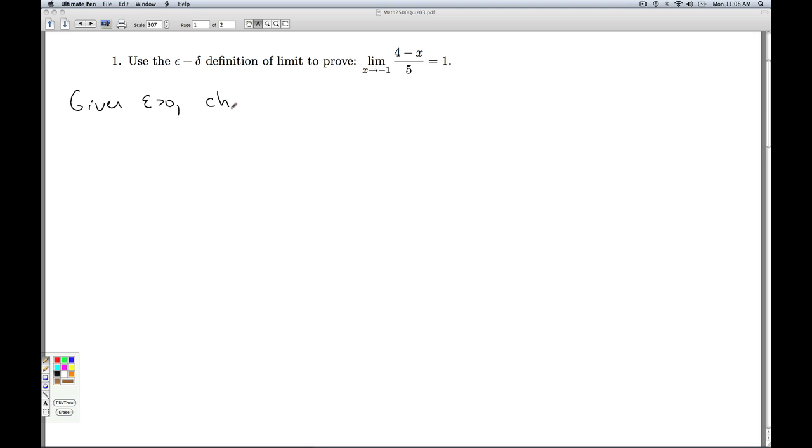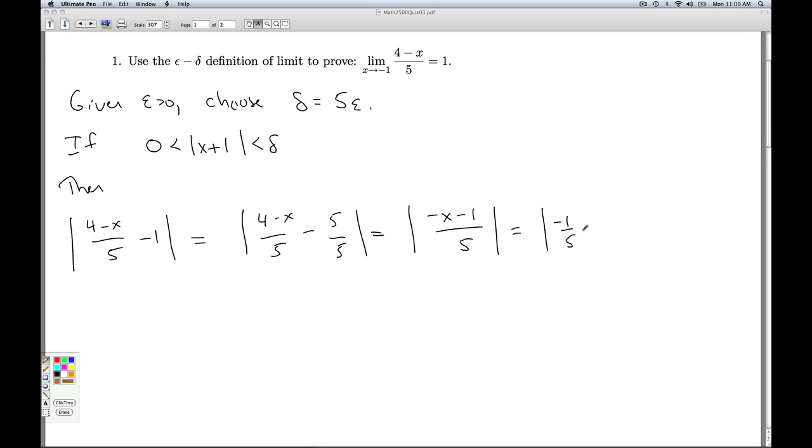Given epsilon greater than 0, choose delta to be 5 times epsilon. Then if 0 is less than the absolute value of x plus 1 is less than delta, then I'm just going to recopy most of my work. The 4 minus x over 5 minus 1 is equal to the 4 minus x over 5 minus 5 over 5, which is minus x minus 1 over 5, which is negative 1 fifth times x plus 1 in absolute value, which is the absolute value of negative 1 fifth times the absolute value of x plus 1, which is 1 fifth times the absolute value of x plus 1. So I'm just reworking my arithmetic.